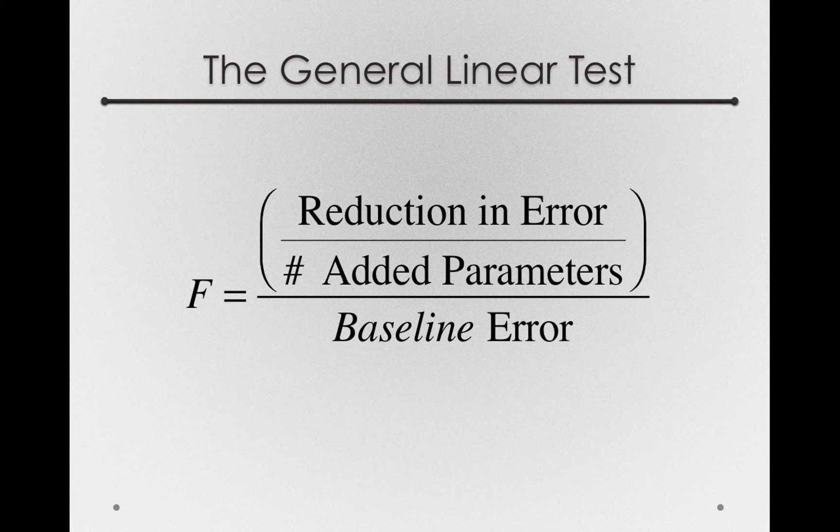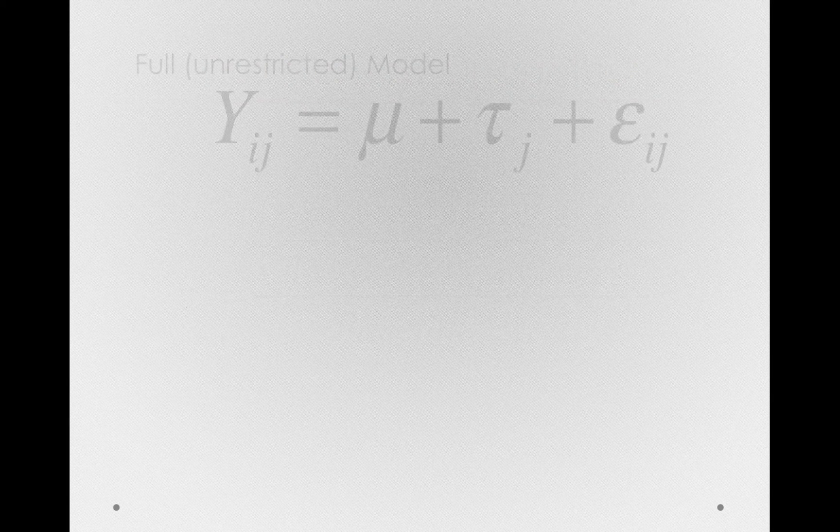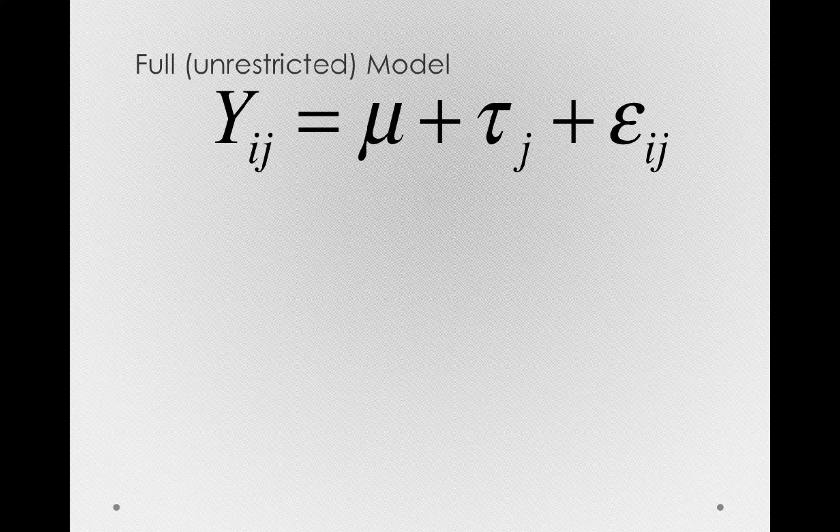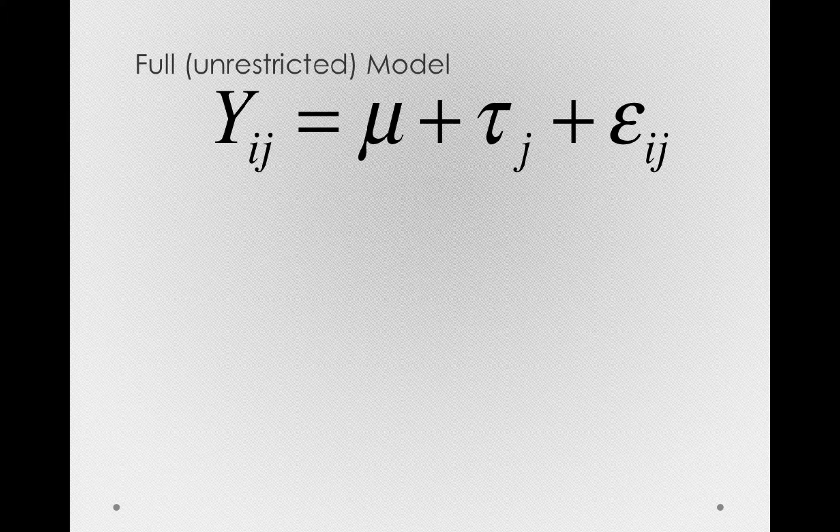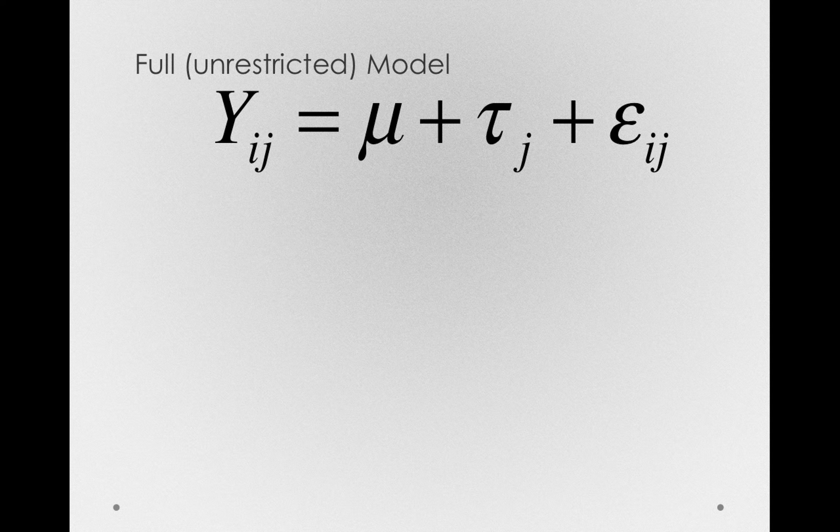So let's look at our full and unrestricted models, and let's apply the general linear test. First, our full model. Our full model will be the one-factor linear model that we developed before. The yij is equal to a mean plus a treatment offset plus individual error.